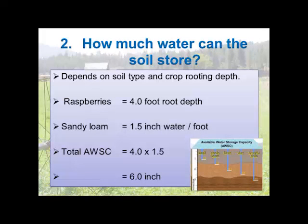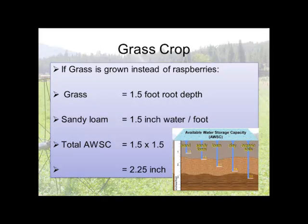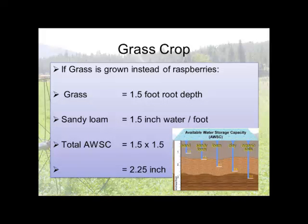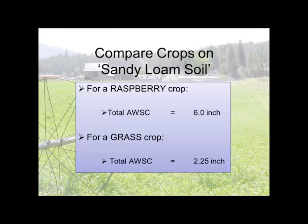How much water can a soil store? Taking raspberries as an example: four-foot rooting depth, one and a half inches of water per foot — we can store a total of six inches at field capacity. For a grass crop at one and a half feet, same soil, we can only store two and a quarter inches versus six inches for raspberries. There's a totally different size gas tank between those two crops — about a third of the size.